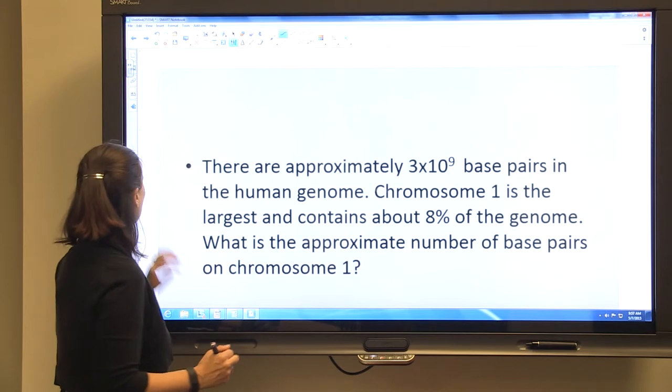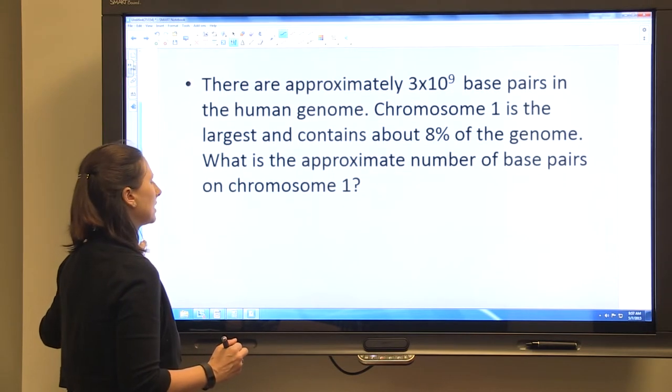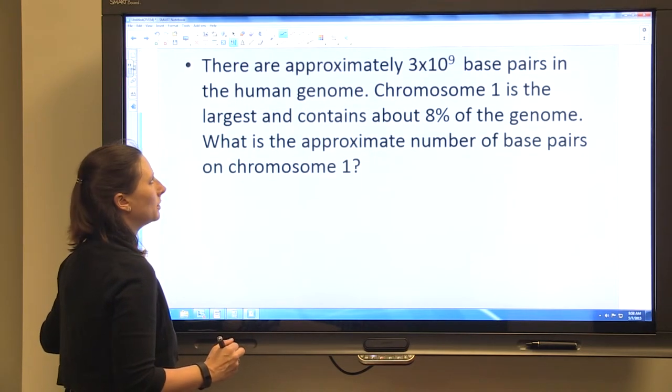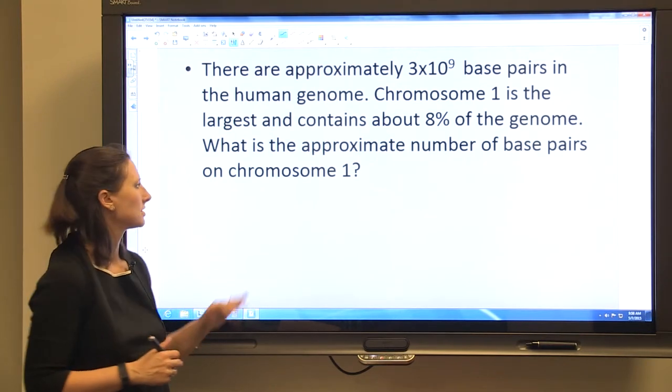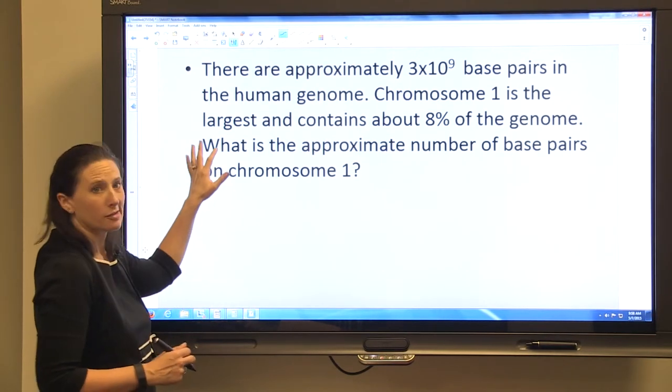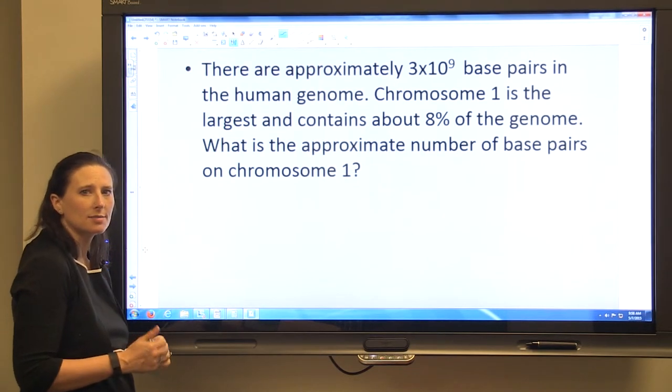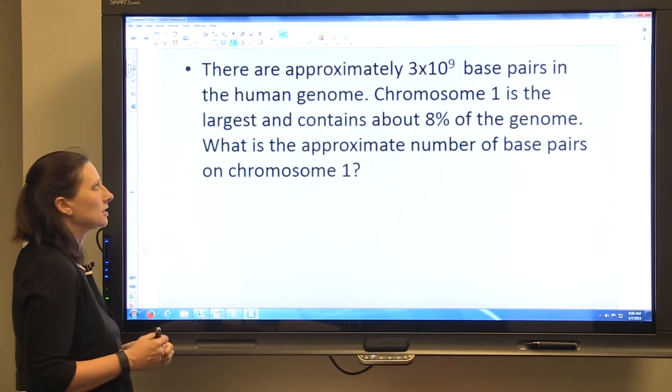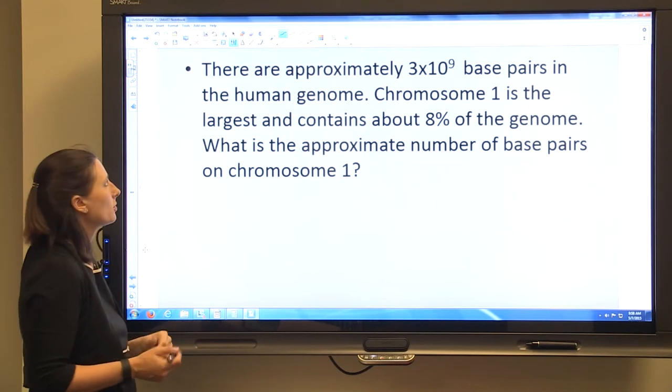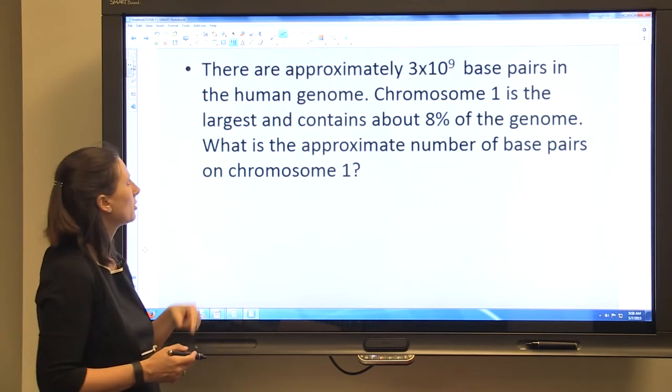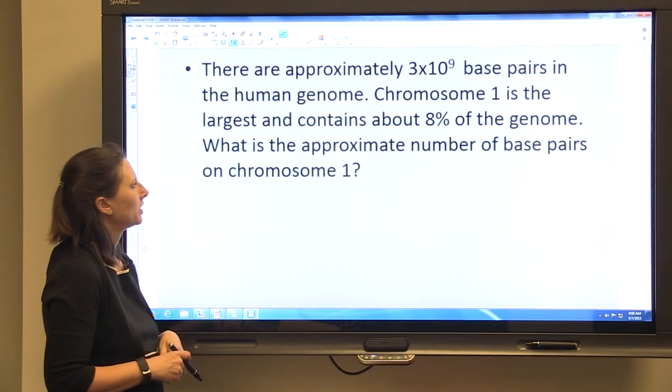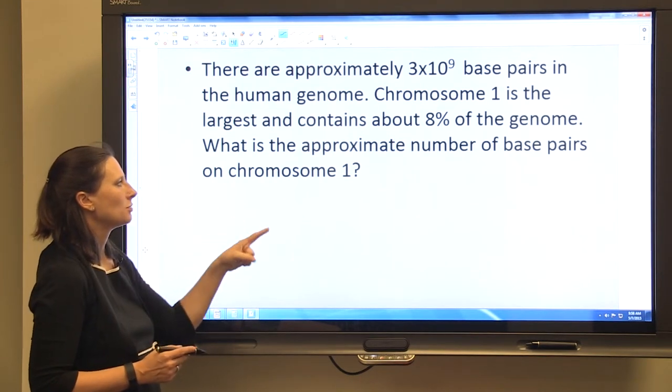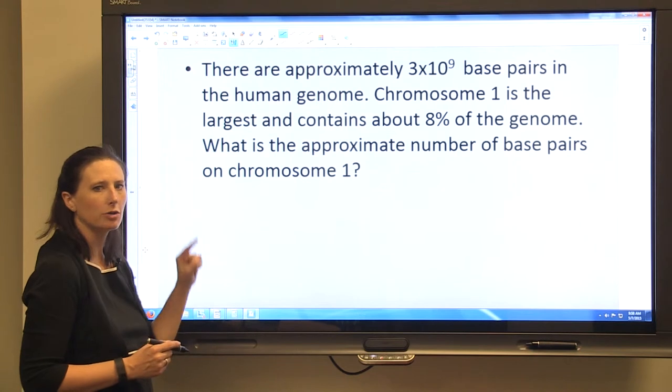So we're going to do one more, a little bit more complicated problem that involves percentages. And it has two steps. This is the first step. There are approximately 3 times 10 to the 9th base pairs in the human genome. Chromosome 1 is the largest of your chromosomes and contains about 8% of your genome. So what is the approximate number of base pairs that are on chromosome 1?